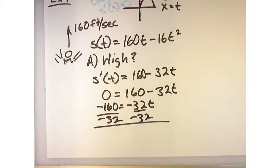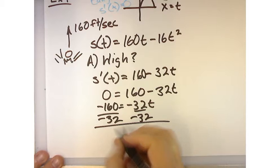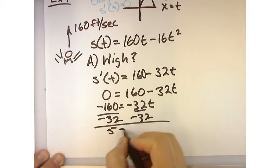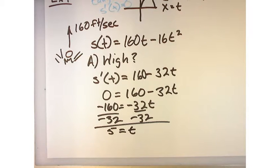And I get T is equal to five. Now what does that mean? That means after five seconds, this will reach the maximum height.